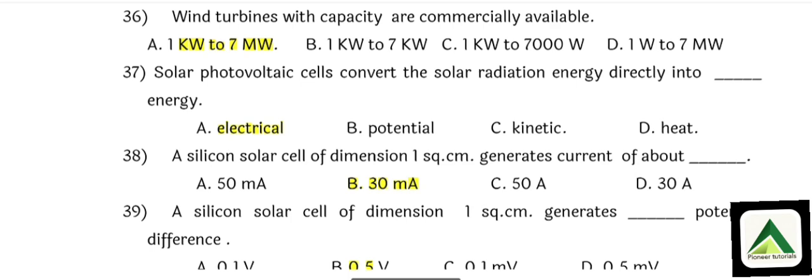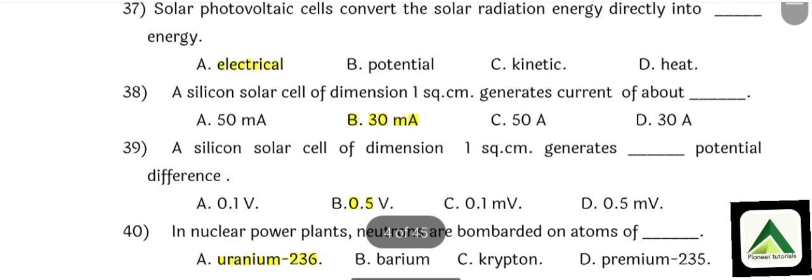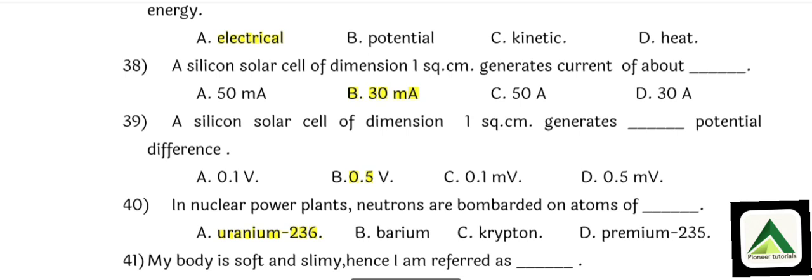Question number 37: Solar photovoltaic cell converts the solar radiation energy directly into electrical energy. That is option number A: Electrical energy. Question number 38: A silicon solar cell of dimension 1 square centimeter generates current of about option number B: 30 milliampere.